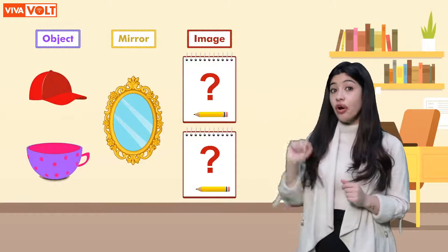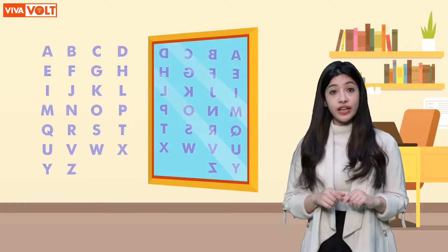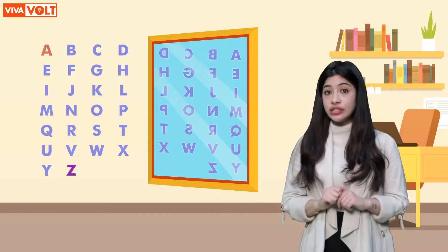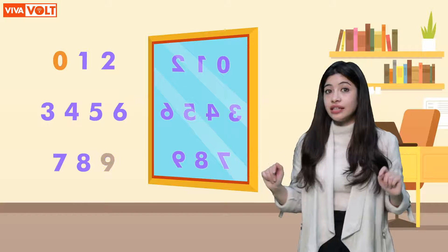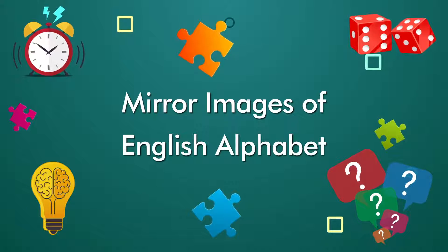Try drawing these two images to observe the differences. We will learn to do various exercises based on mirror images. To do so, we need to learn about the mirror images of letters from A to Z. We also need to learn the mirror images of digits 1 to 9. Let's have a look at these mirror images.